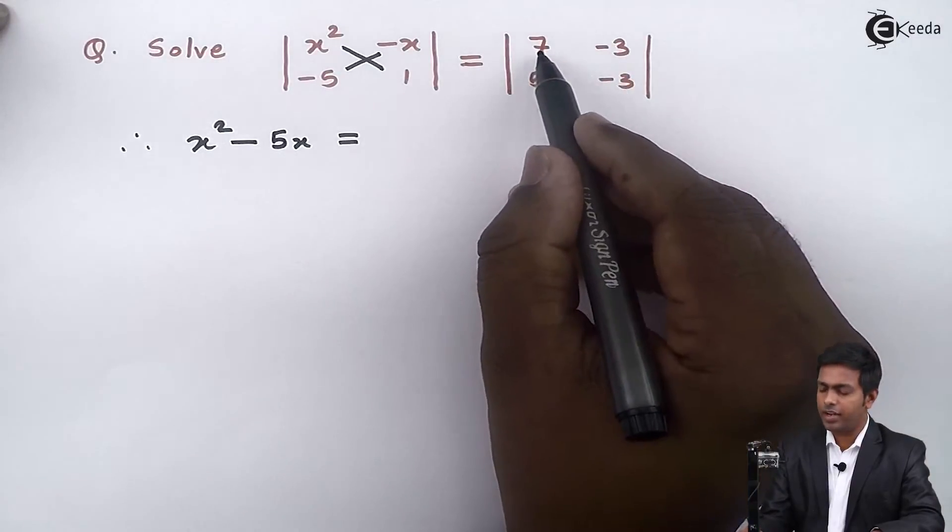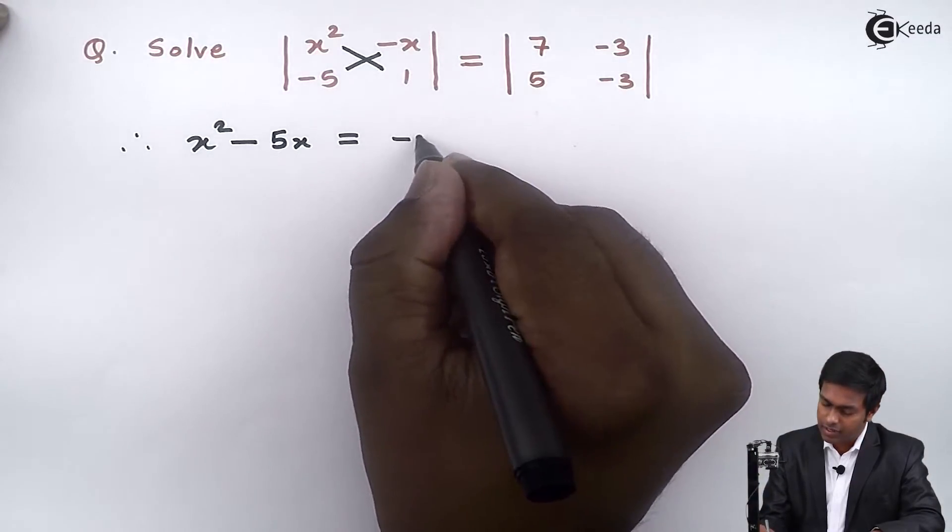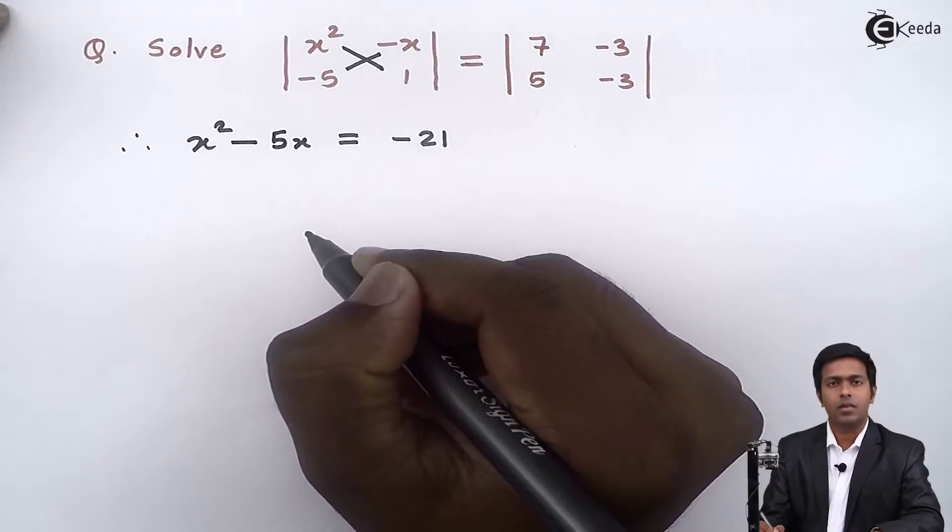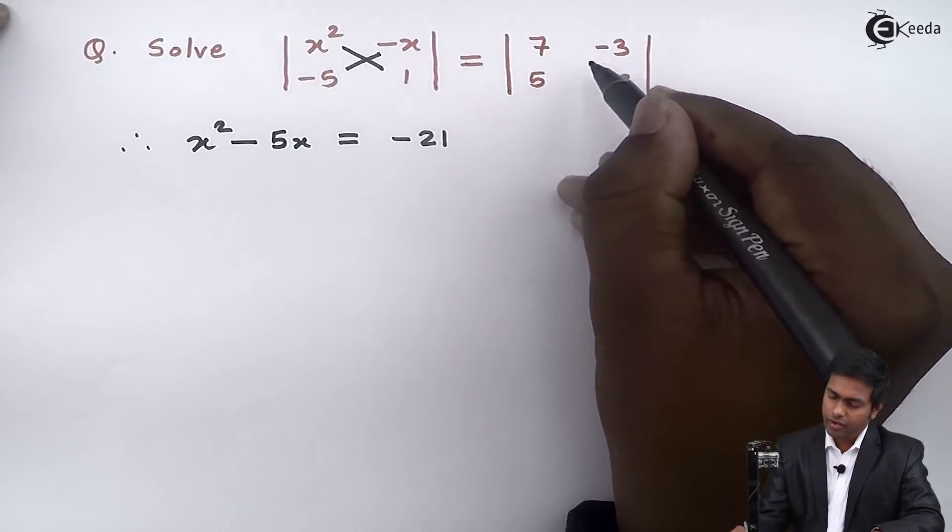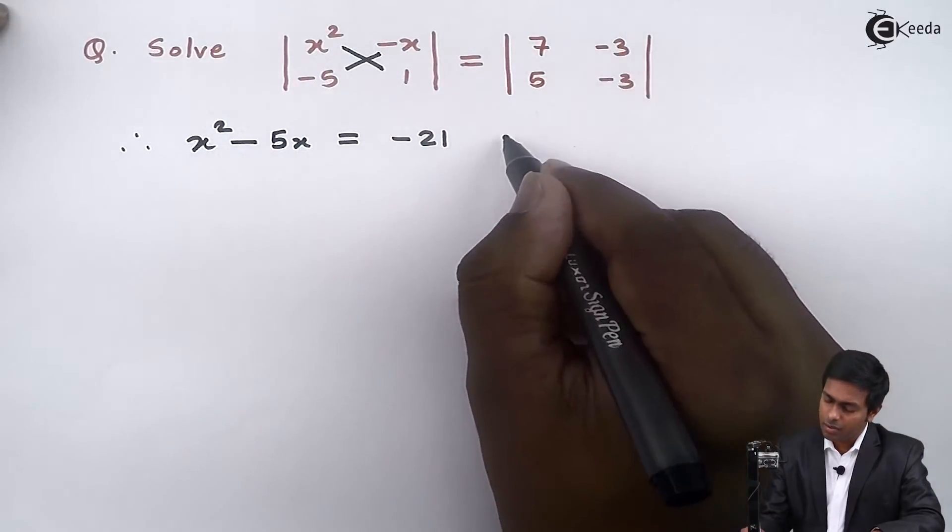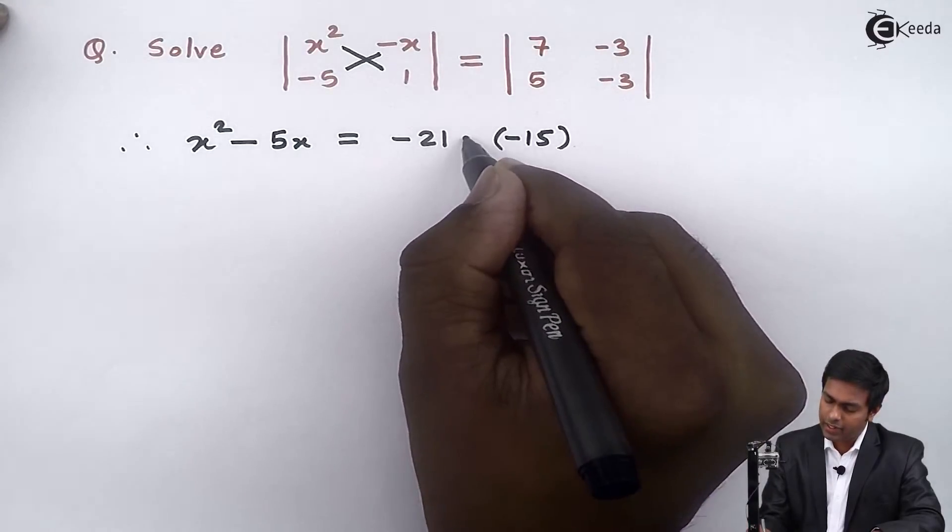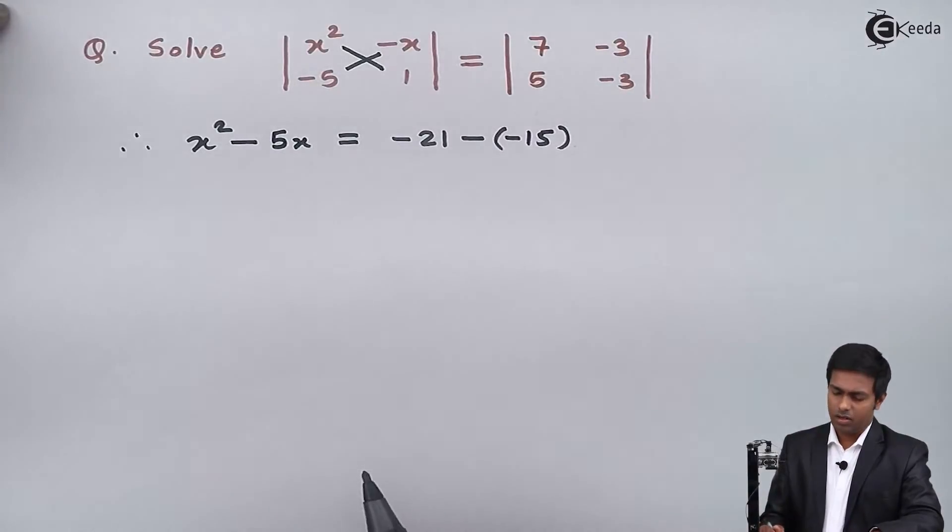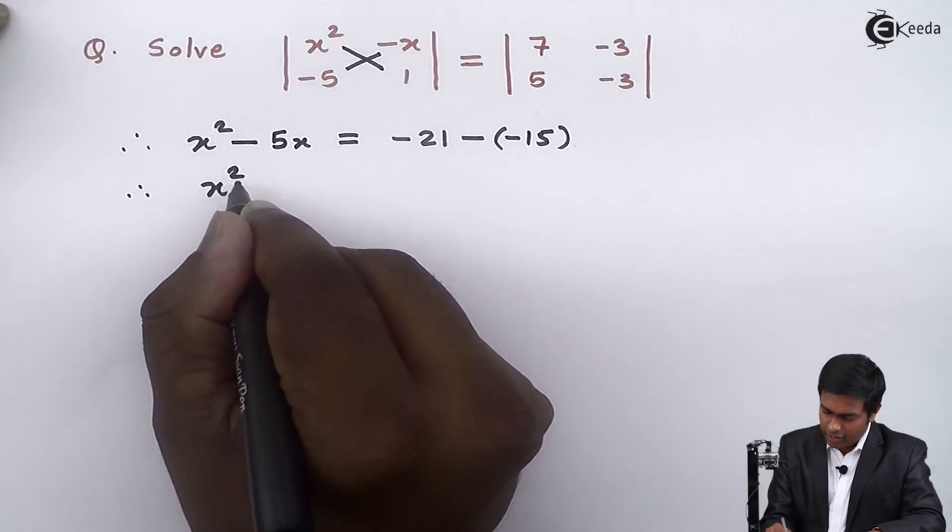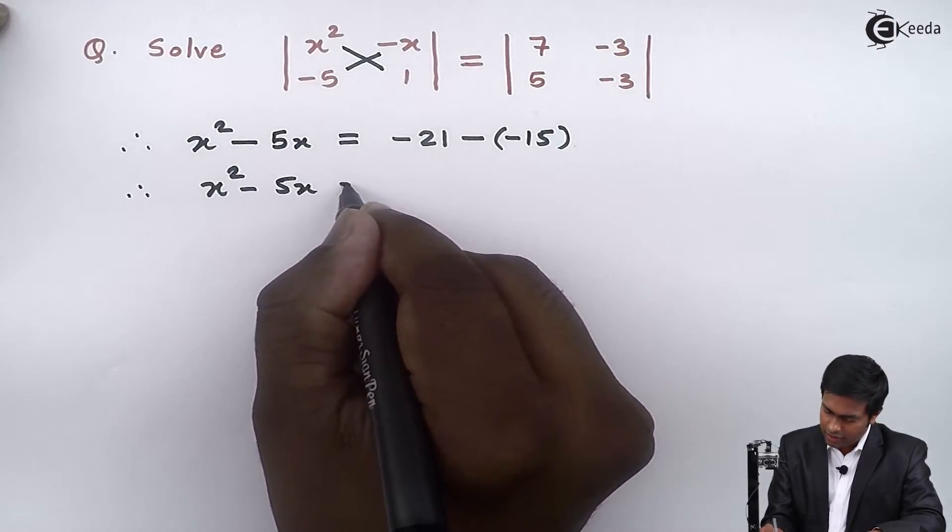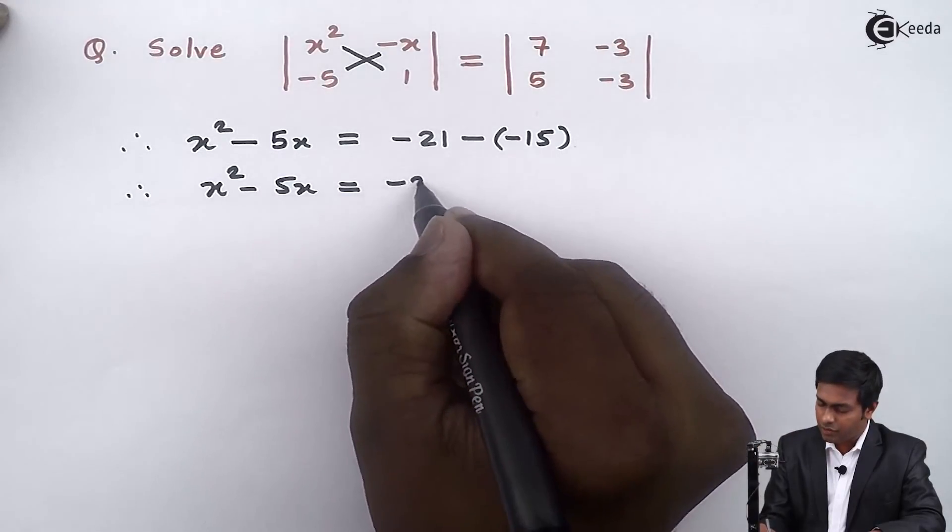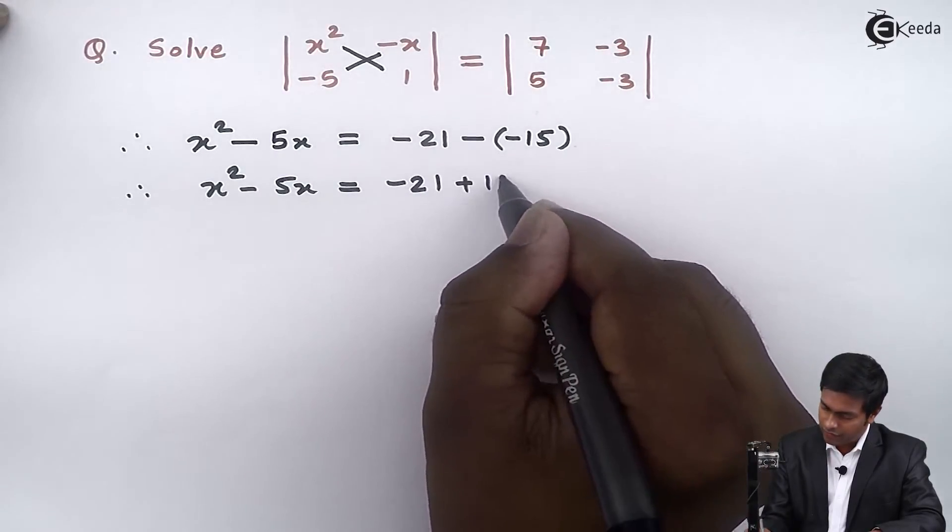this will become 7 into minus 3 that is minus 21. And 5 into minus 3 that is minus 15, again we will subtract the values